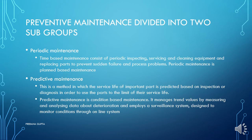Preventive maintenance is divided into two subgroups. The first is periodic maintenance, which is time-based maintenance. It consists of periodic inspecting, servicing, and cleaning equipment and replacing parts to prevent sudden failure and process problems.